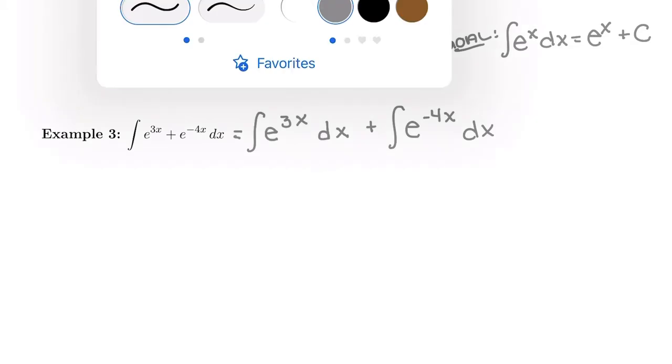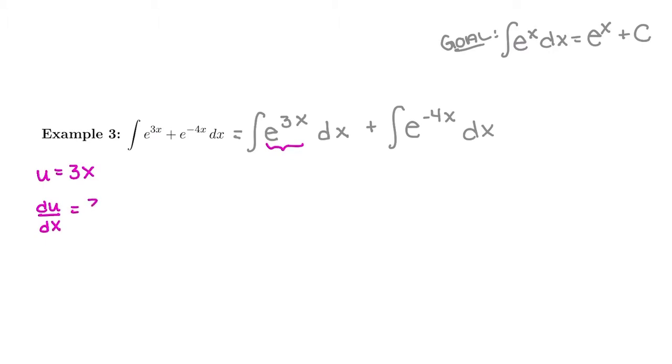So we're going to do u-sub twice. So I'm going to do it first with this piece here. u is going to be the exponent. So u is going to be 3x. The derivative of 3x, du dx, is just going to be 3.